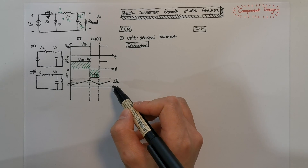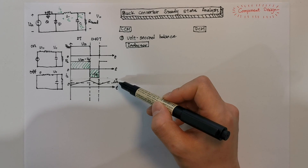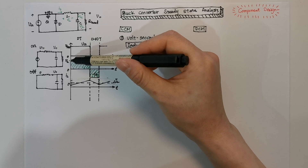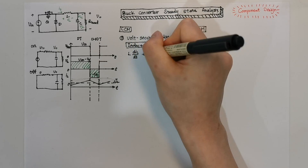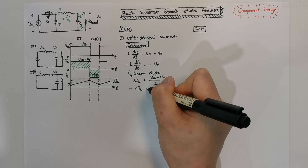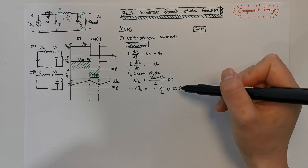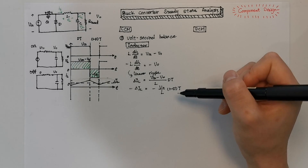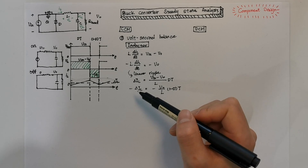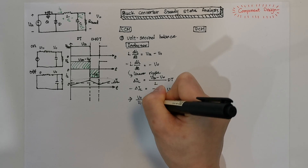The middle line indicates the average current value. In a lot of textbooks, we use uppercase letters for constant values and lowercase letters for waveforms or variables. According to the inductance definition, we can have two equations for the on and off states, and as we regard the current as changing linearly, we can express delta I as shown. These two equations are used to calculate the current ripple. It doesn't matter which one you use in CCM mode, because the left side of both equations is equal. So we can set these two equations equal, and then we have the relation between duty cycle and the input/output voltage.